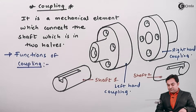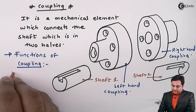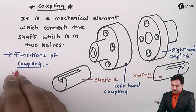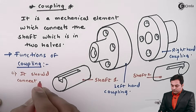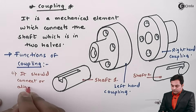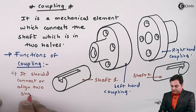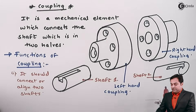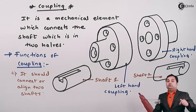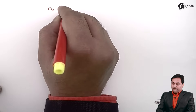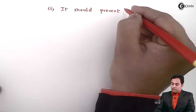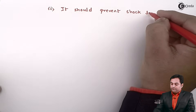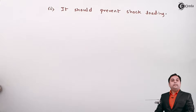The first function is that coupling should connect or align two shafts — that is the primary function of a coupling, to connect and make two shafts in line with each other. The next function is that it should prevent shock loading.